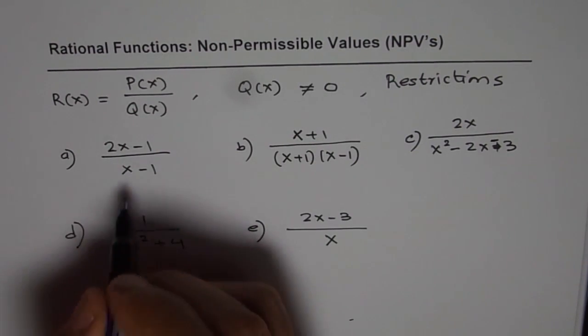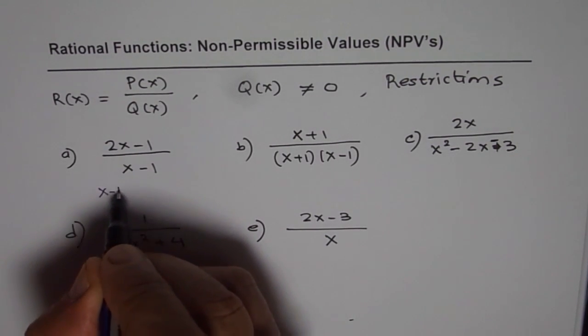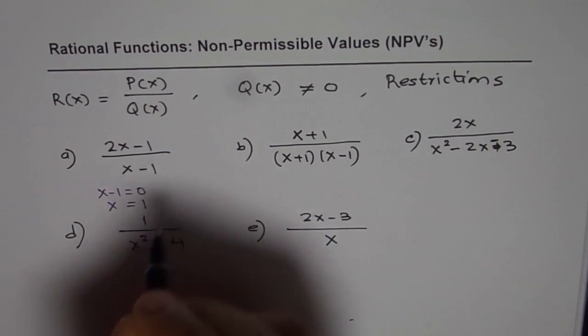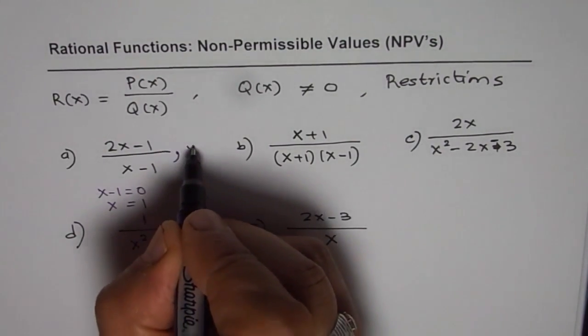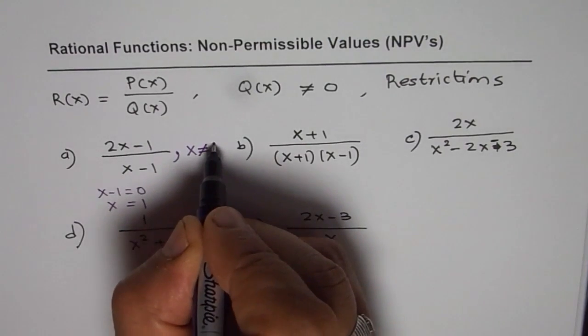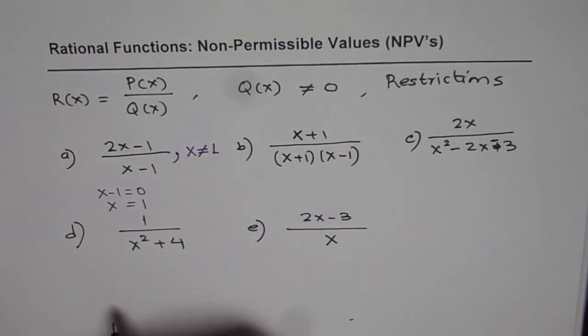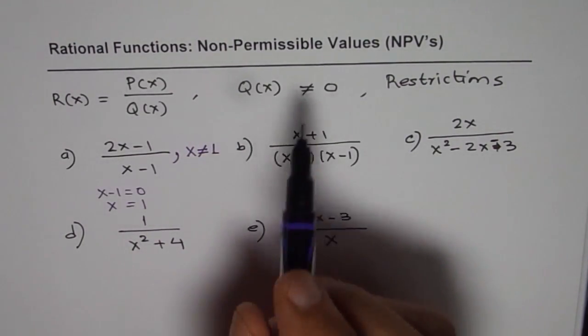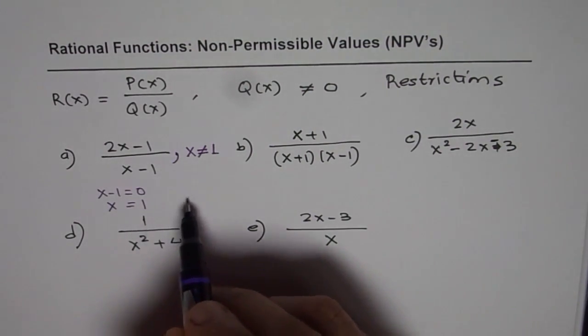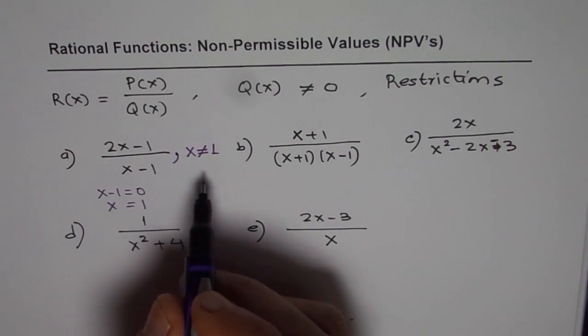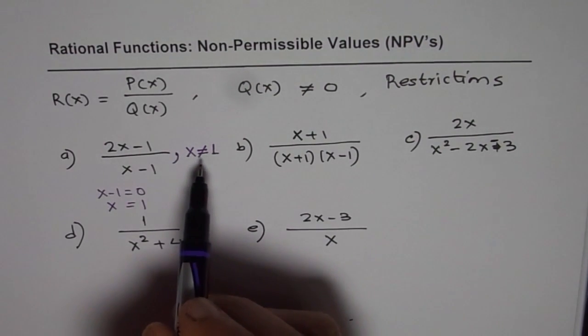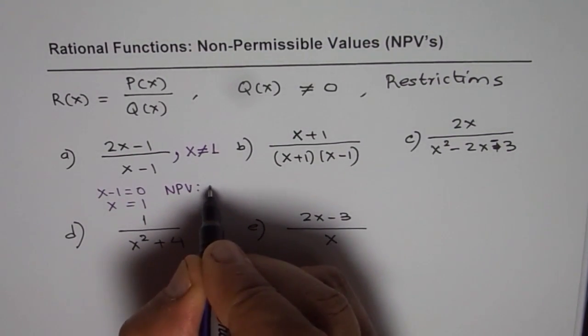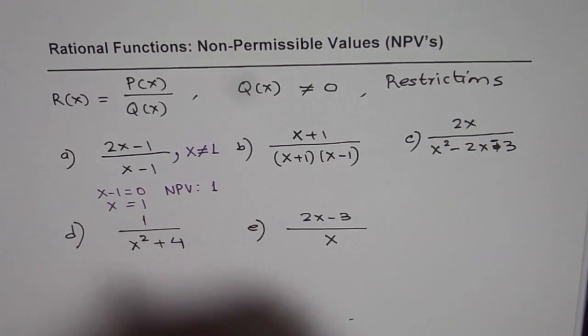In the very first one we equate the denominator to 0. So if x minus 1 equals 0, then we get x equals 1 and therefore the restriction is that x should not be equal to 1. Or if the question is write non-permissible values, the non-permissible value is 1. We will write it in two ways: first way as a restriction, and we can also say the non-permitted value is 1 or x equals 1.